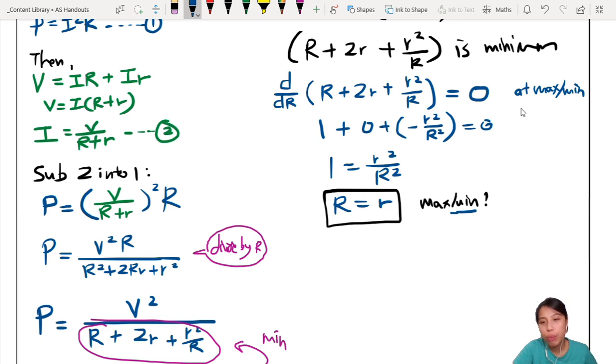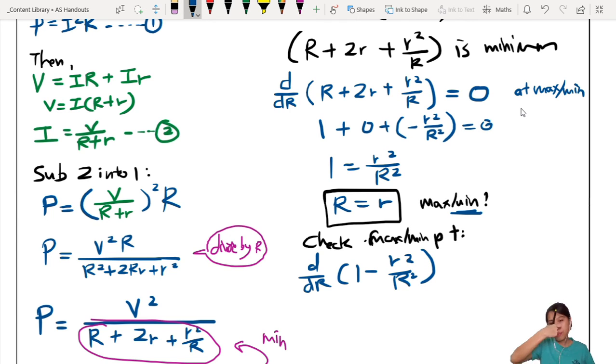But how do we know, is it max or min? We need to test it. So for extra, just to check if this is max or minimum, we want to make sure it's minimum, you have to differentiate again. So we check if function is a max or minimum point. So how to check? Differentiate again. So you differentiate your 1 - r²/R. Differentiate again, this is what we call the second derivative. Differentiate 1 becomes 0. Differentiate this, -r²/R², you will get 2r²/R³.